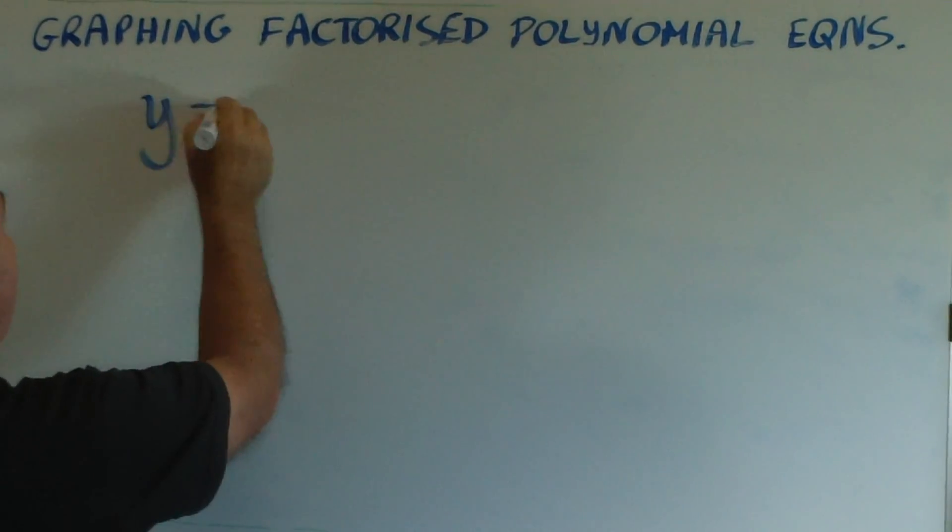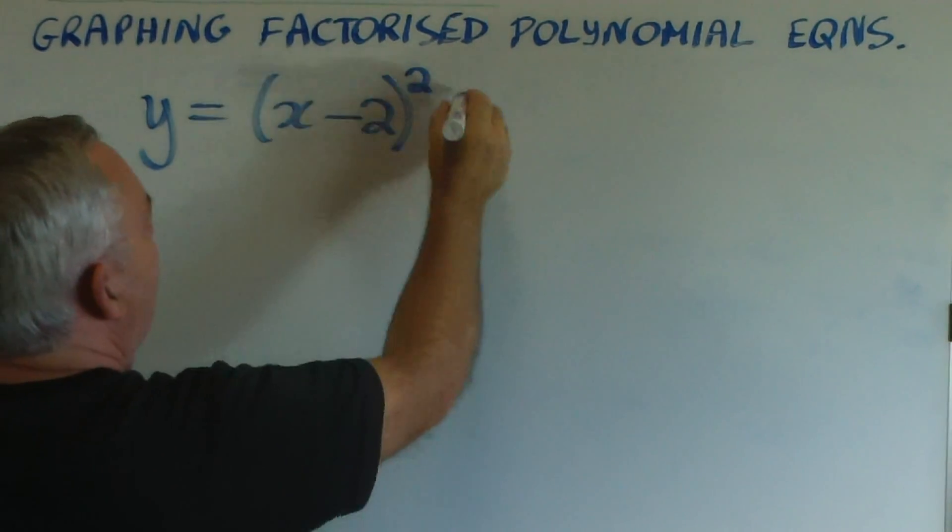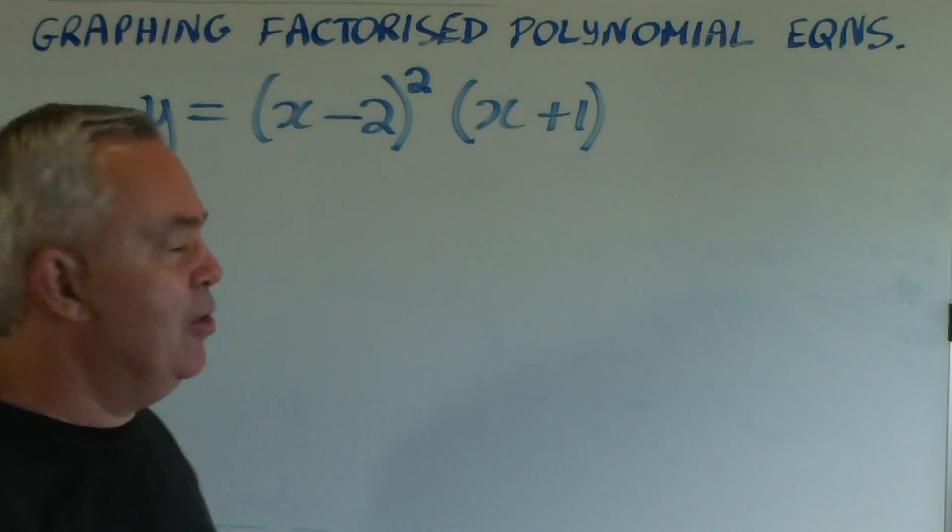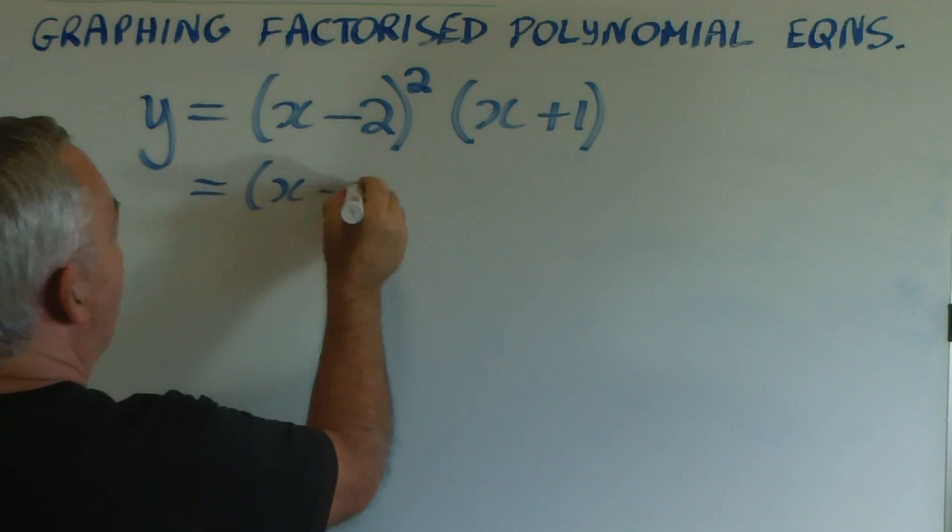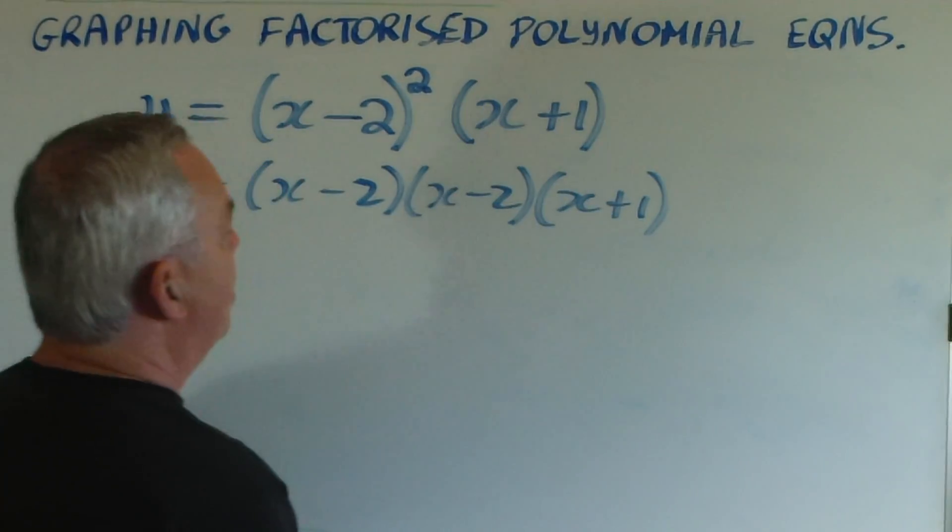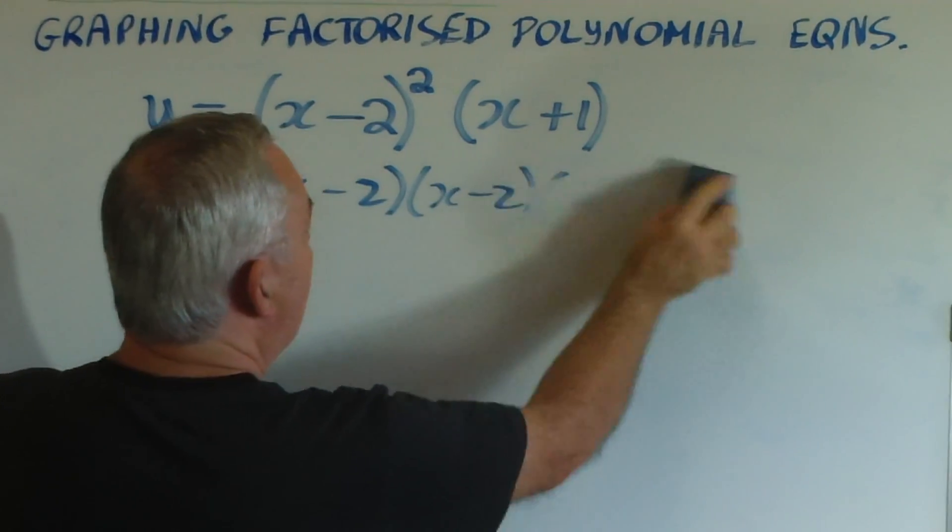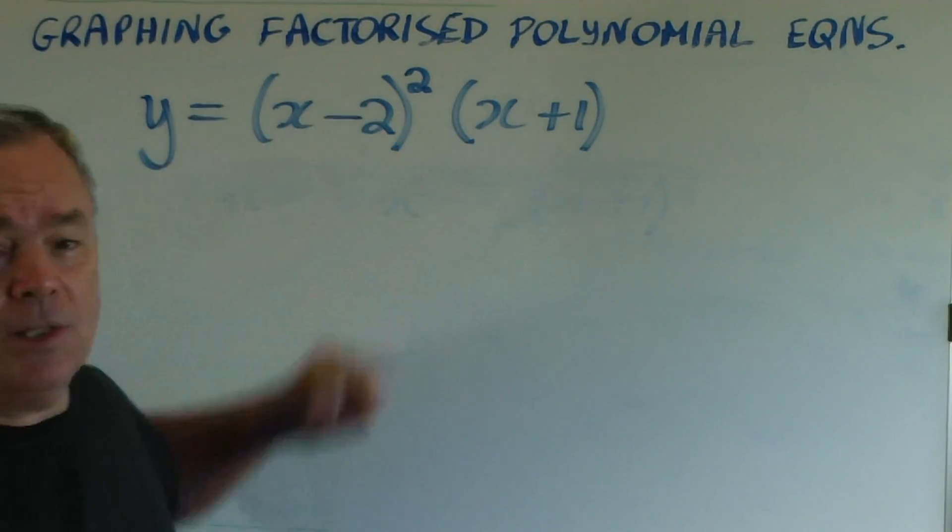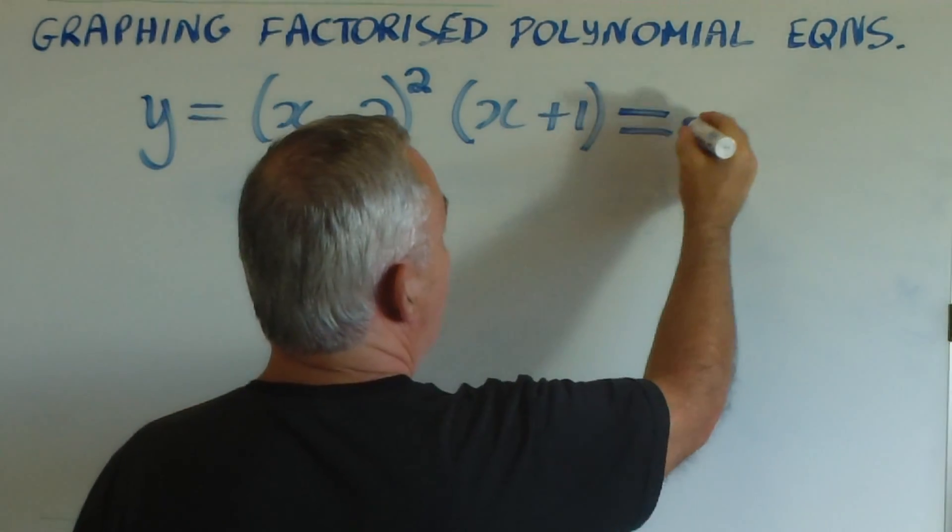Let's choose as an example y equals (x minus 2) squared times (x plus 1). You can see that I could have written this as (x minus 2) times (x minus 2) times (x plus 1), but this is the abbreviated form using the square. Now, what effect does this square have on the graph? Because it has no effect on the root.